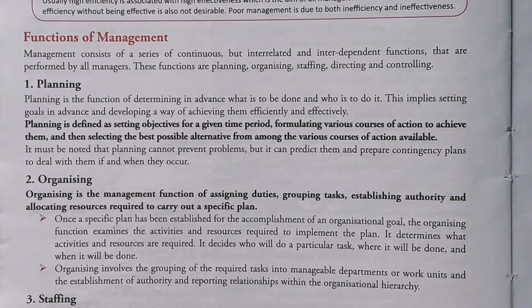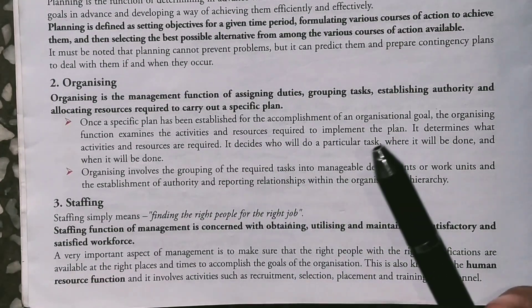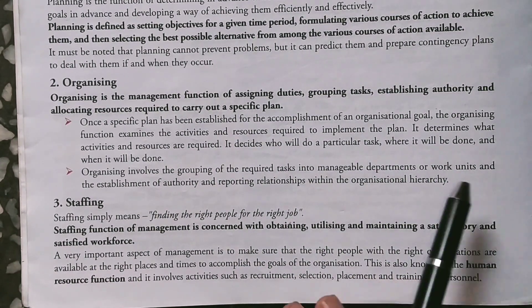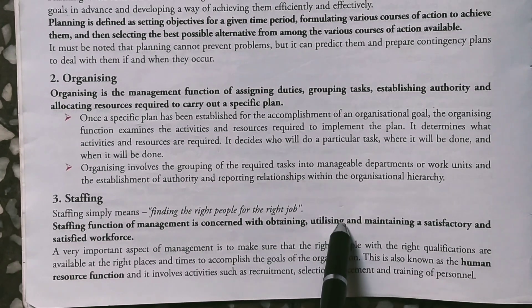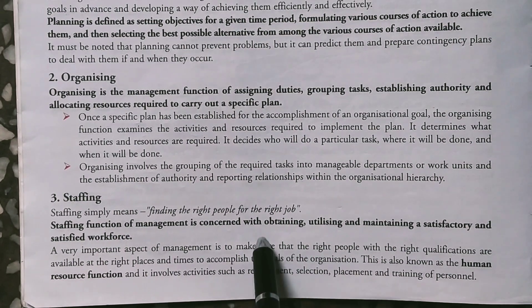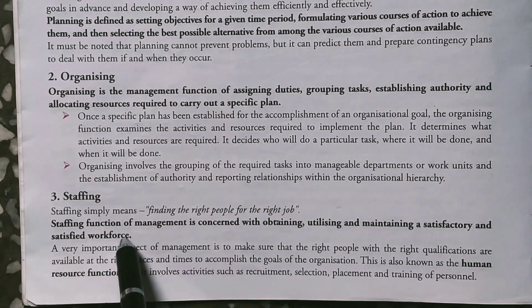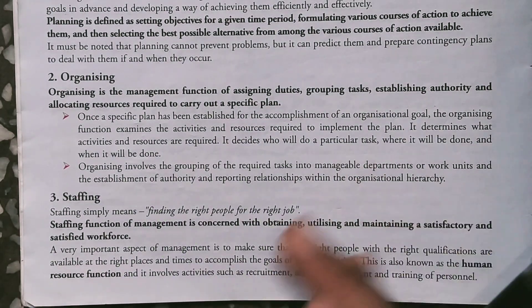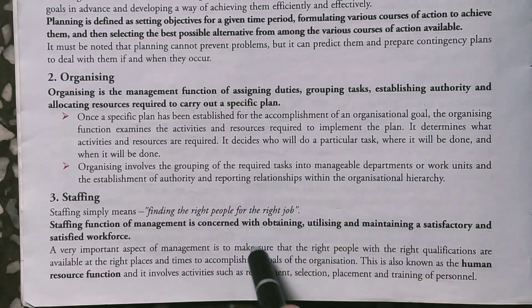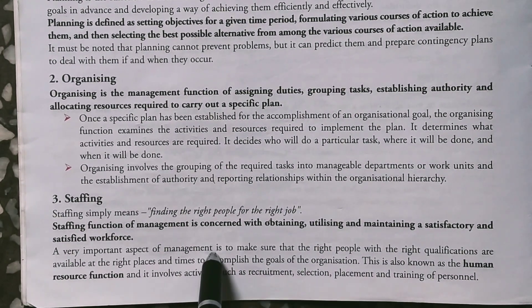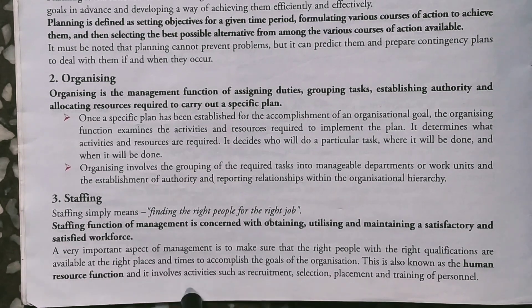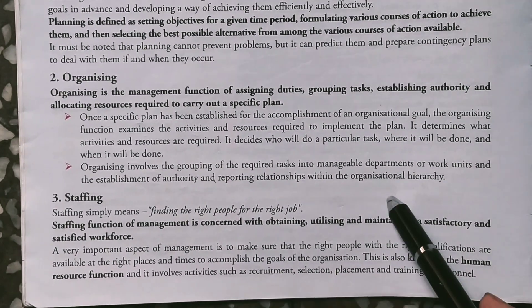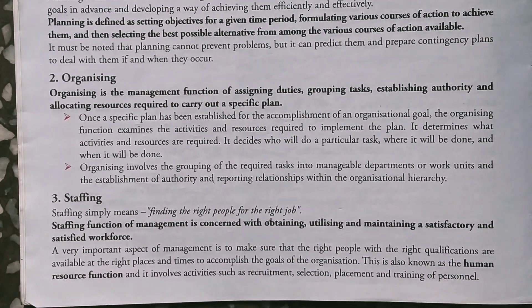Next is staffing. In staffing, we have assigned tasks to groups, now we have to give a person to each task. Staffing means finding the right people for the right job. The staffing function of management is concerned with obtaining and maintaining a satisfactory workforce so that they are able to carry out activities. We need the right person to do the work. Staffing ensures that the right people with the right qualifications are available in the right place at the right time to accomplish the goals. It is also known as the human resource function, and includes recruitment, selection, placement, and training of personnel.